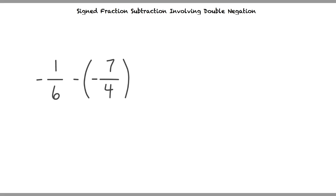We are given negative 1 sixth minus negative 7 over 4. Here we can see that the denominators of our fractions are different. This means that in order to perform addition or subtraction, we must find the least common denominator.